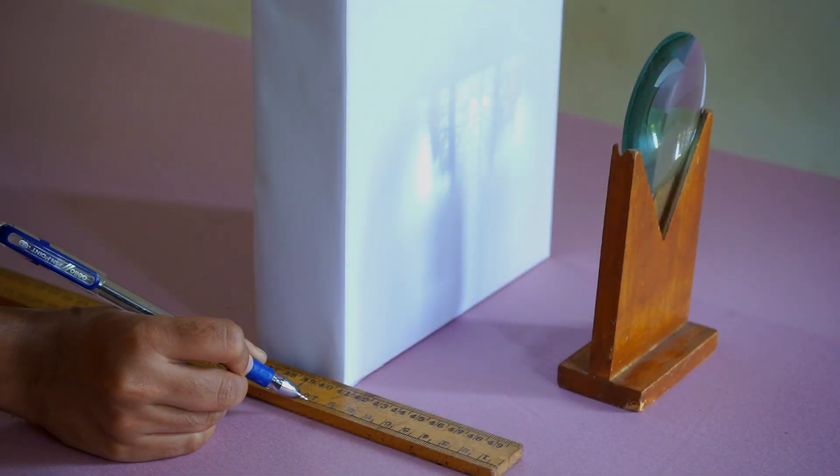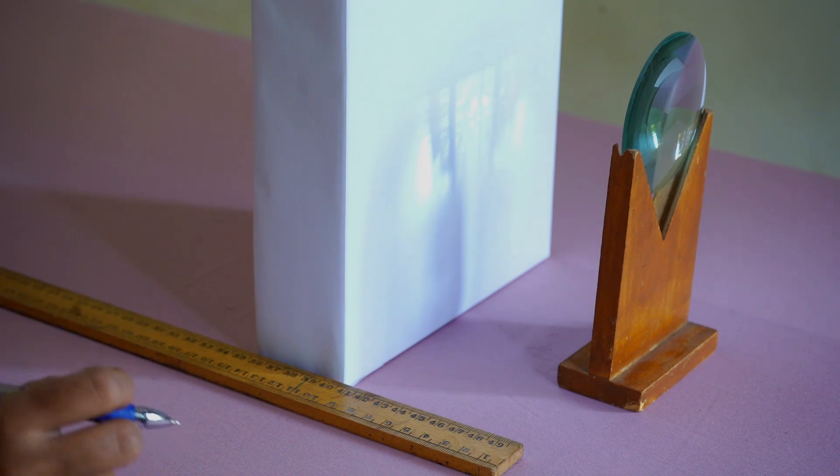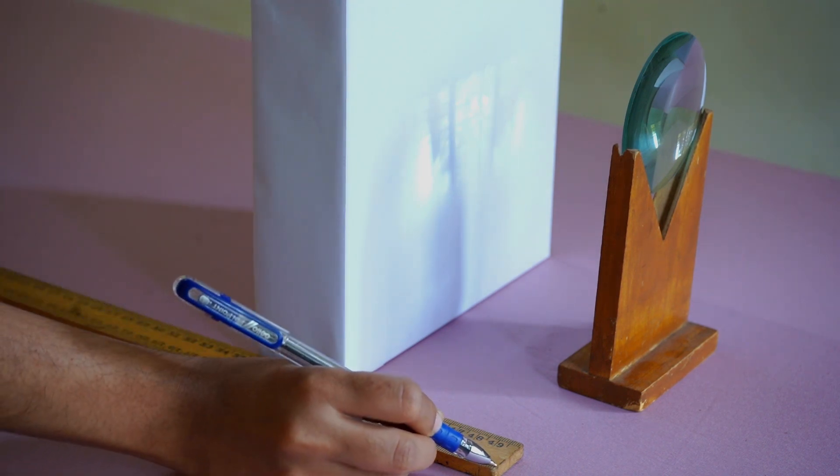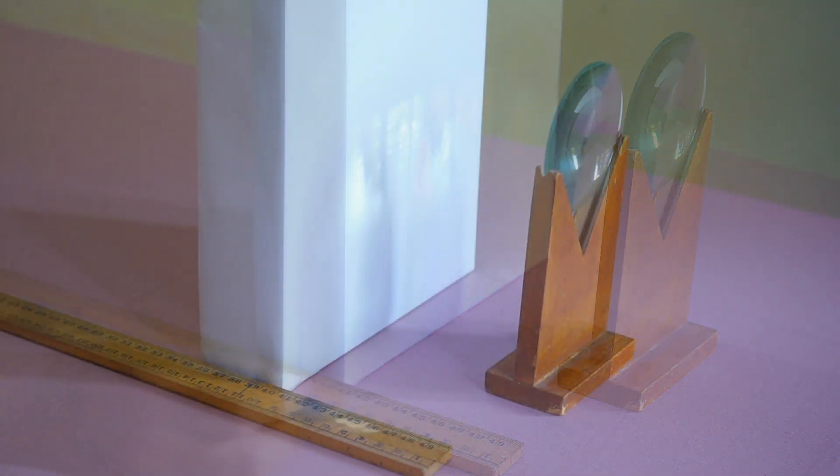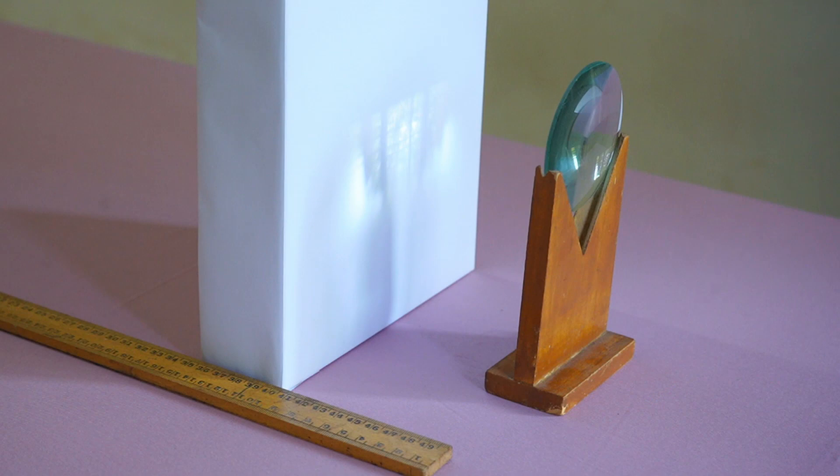Measure the distance between the screen and the optical center of the convex lens using a measuring scale. Record the observation as the focal length of the lens.